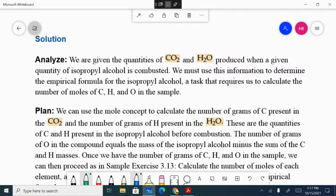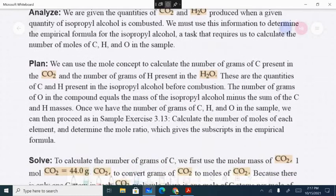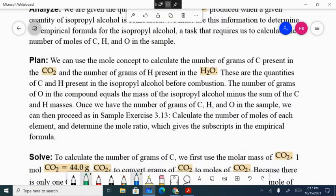So here's how we do these problems. You're given the quantities of carbon dioxide and water produced when our sample was combusted. Now we're going to have to use this information to determine the empirical formula for the compound. I already know what isopropyl alcohol's chemical formula is. You probably don't. But there's going to be cases where you don't know what the hydrocarbon is at all.